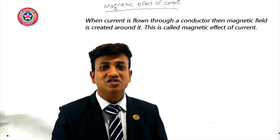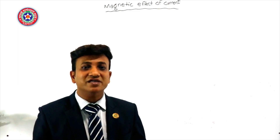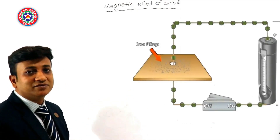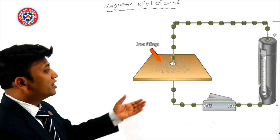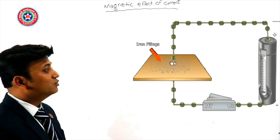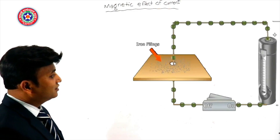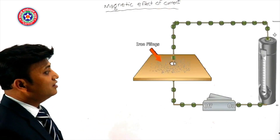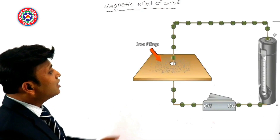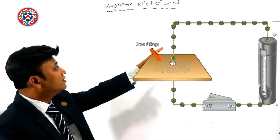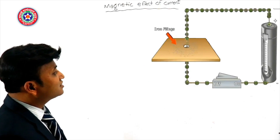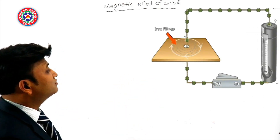This magnetic effect of current was experimentally verified by Oersted in 1819. Here is the demonstration of his experiment. The setup has a copper wire, a key, a battery, and a thick sheet of cardboard with a hole at its center. The iron filings arrange themselves in concentric circles around the conductor.